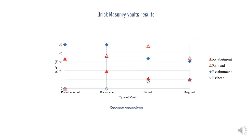This figure plots the reaction forces at the abutments and at the head walls for the four stable configurations. The diagonal pattern corresponds to the lowest vertical force since part of the vault self-weight is taken by the head walls. This does not occur in the radial pattern, even when head walls are present, since all the vault's self-weight is taken by the abutments. On the other hand, pitched vaults are responsible for the highest horizontal thrust at the head walls, whereas the diagonal pattern produces the lowest thrust at the abutments.